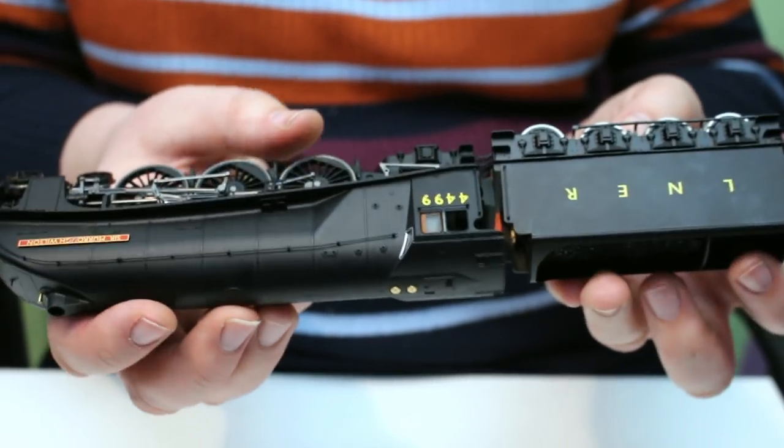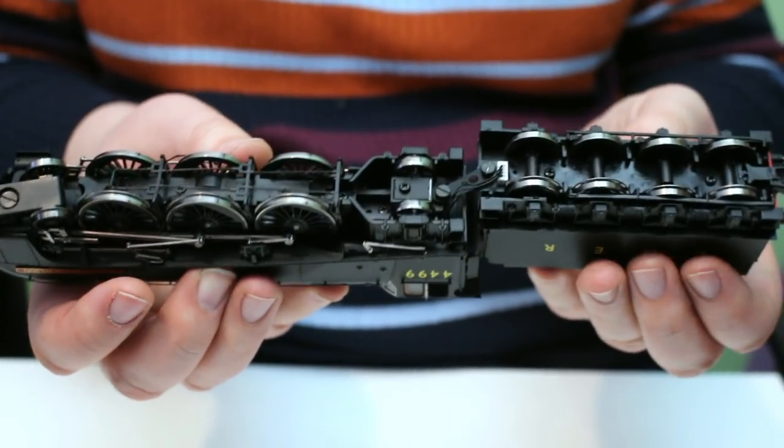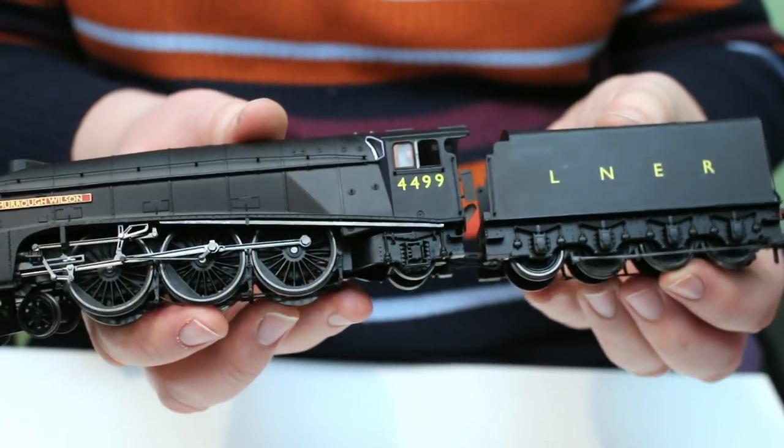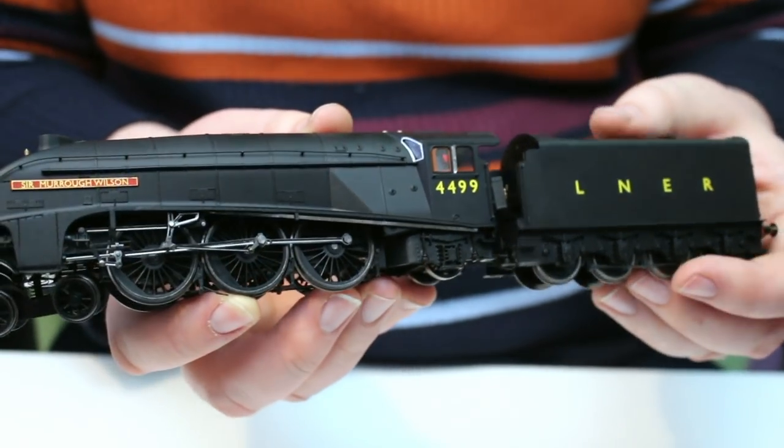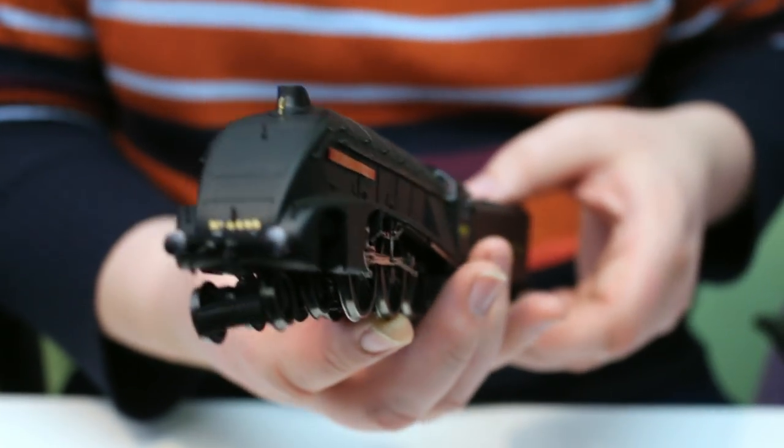For aesthetics, well to me they really have captured every aspect of the A4 Pacific really well. I can't really find anything wrong with the way that this model is finished off. The Walschaerts valve gear, the fluted coupling rods and that centre sprung front bogey, everything is there as it should be. So for aesthetics it gets a 10 out of 10.